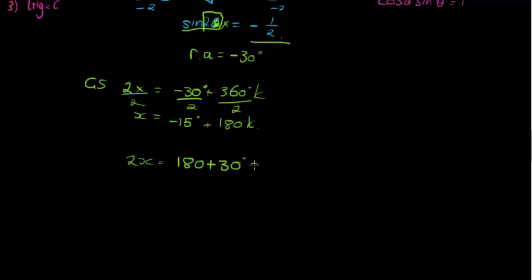So, plus 360 degrees times k. So, now, if I divide everything with 2 as well, 180 plus 30 gives me 210. 210 divided by 2 gives me 105 degrees plus 360 divided by 2 is 180 degrees times k. And, just remember to remind everyone reading that k is an element of integers.